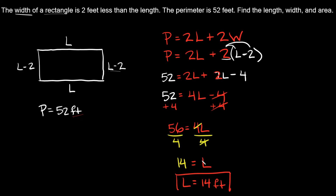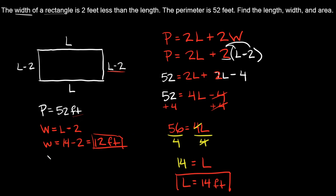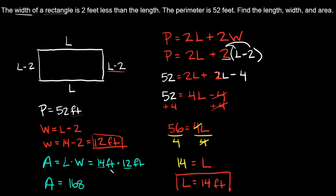Now let's find the width and the area. The width is equal to L minus 2. The length is 14, so 14 minus 2 is equal to 12. Our units are feet, so the width is equal to 12 feet. And then the area is equal to the length times the width, which is 14 times 12, equals 168. Feet times feet are feet squared, so the area is equal to 168 feet squared.